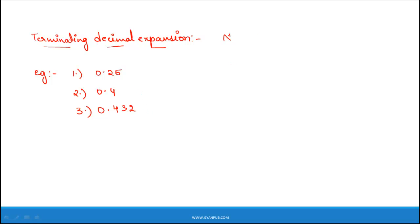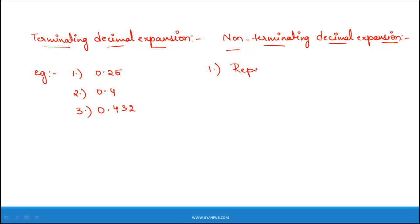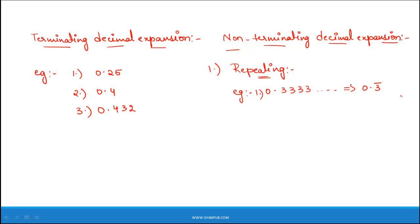Now let us see the types in non-terminating decimal expansion. The first one is non-terminating repeating decimal expansion. For example, 0.33333 and so on — here the digit 3 is repeating. Therefore, this can be written as 0.3 bar. Here the bar indicates that the digit is repeating itself.